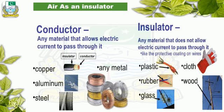Air as an insulator. We all know about conductors and insulators. Conductors allow electricity to pass, but insulators do not allow electricity and heat to pass. Copper, aluminium, and steel are conductors. Plastic, rubber, glass, wood, and cloth are all insulators.